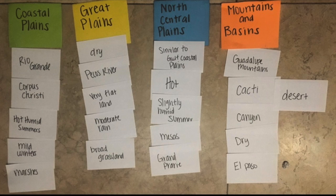You can have the students create their own titles and labels for the words, or the teacher can have them pre-made. I suggest the teacher having them pre-made. As a whole group, or as the teacher walks around, speak of the reasonings for groupings and words that may be replaced, and explain to the students why.